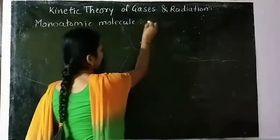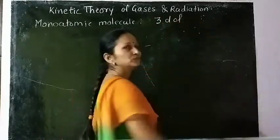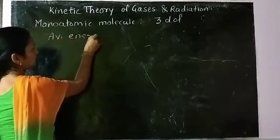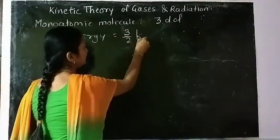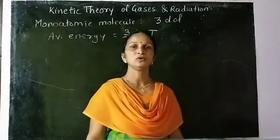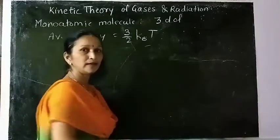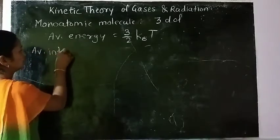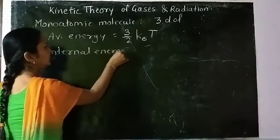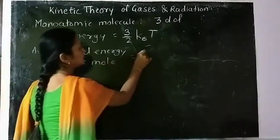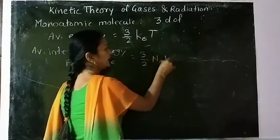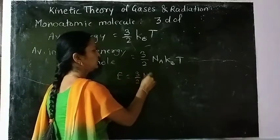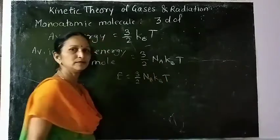For a monoatomic molecule, it has 3 degrees of freedom. The average energy per atom is 3/2 k_B T, where k_B is the Boltzmann constant. It has N_A number of atoms per mole. Therefore, the average internal energy per mole is E = 3/2 N_A k_B T.